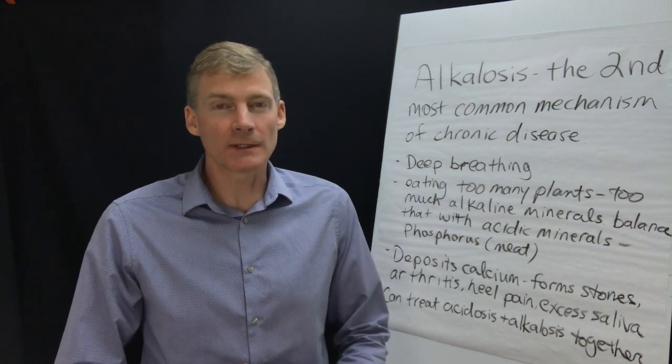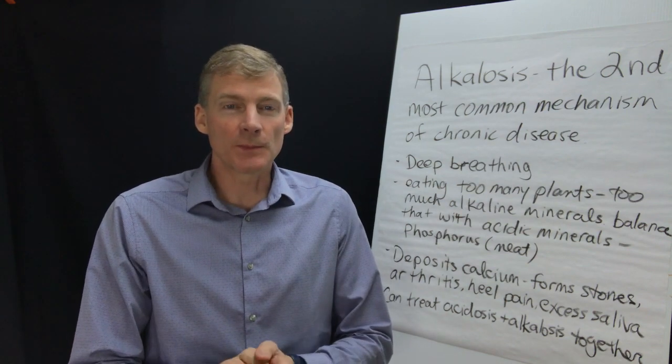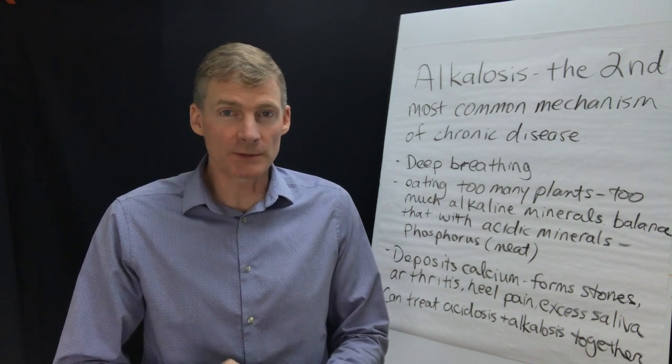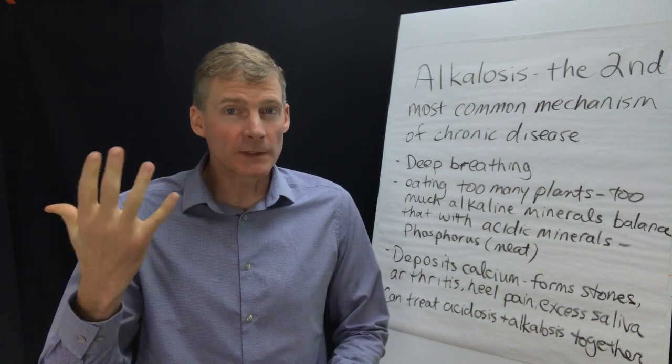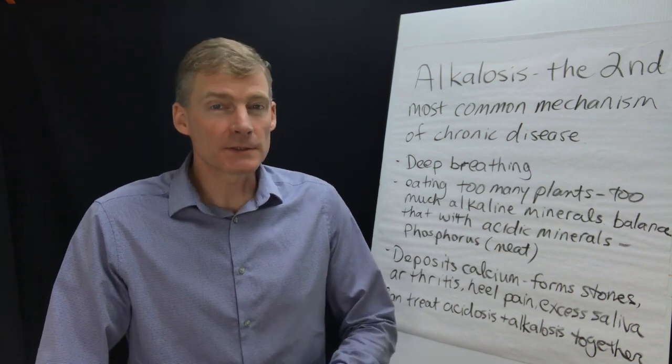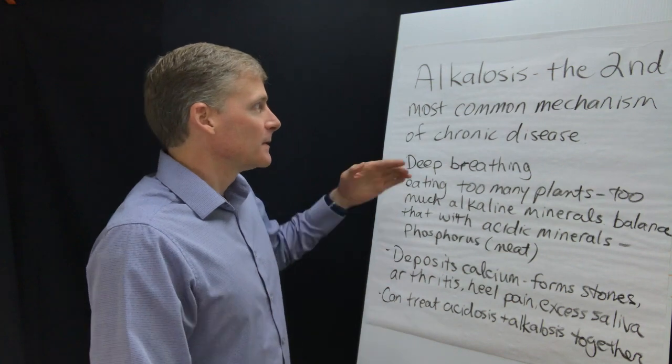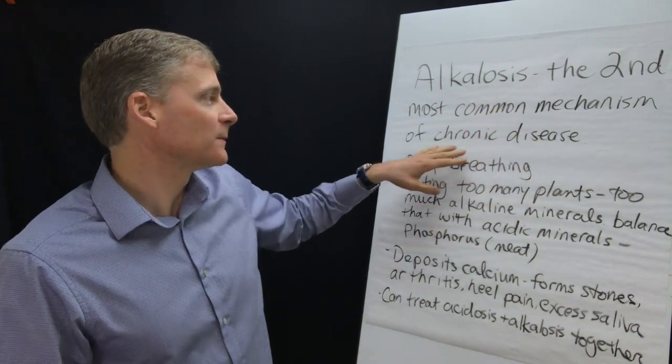So I talk about acidosis a lot. It means the pH of the blood is too low. You can have lactic acidosis which has normal pH of the blood but too much lactate, crowding out oxygen. So what alkalosis is, is the pH of the blood is too high and it's the second most common mechanism of chronic disease.